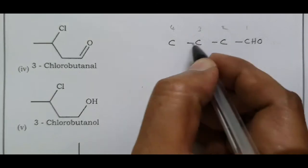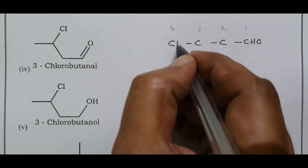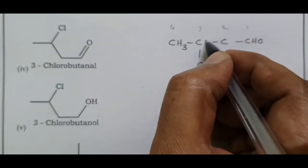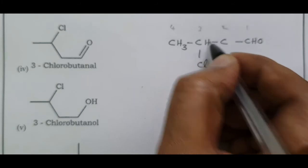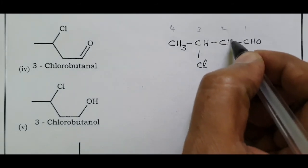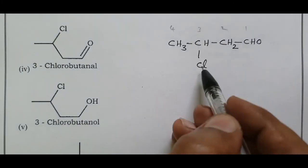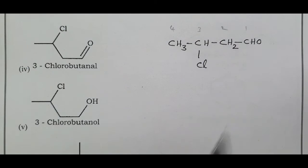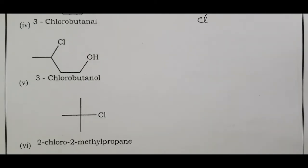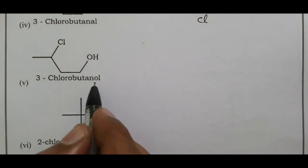Carbon with one bond gets three hydrogens; carbon with three bonds gets one hydrogen; carbon with two bonds gets two hydrogens. The compound is 3-chlorobutanal — all positions are indicated by the numbering.